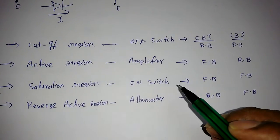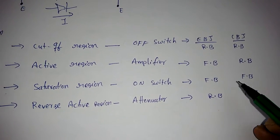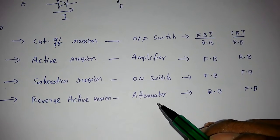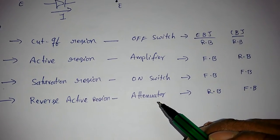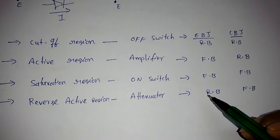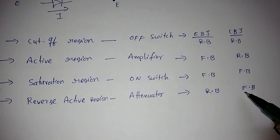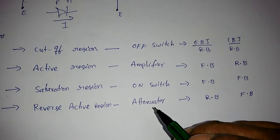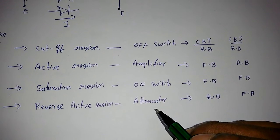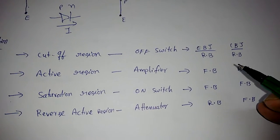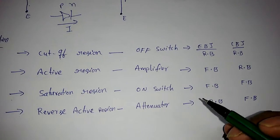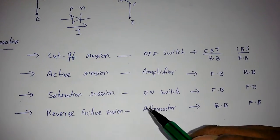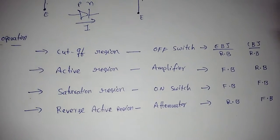In the saturation region, the transistor behaves as an on switch — both junctions are forward biased, and since both diodes are on it looks like a short circuit. In the reverse active region it behaves as an attenuator: the input junction is reverse biased and the output junction is forward biased, so the input signal is decreased by beta or alpha times.